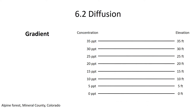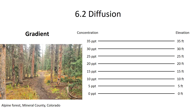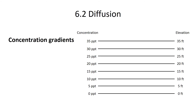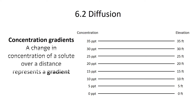To understand what a gradient is, imagine hiking up a hill or in the mountains. As you hike up, you're going up an elevation over a distance — you might hike one mile and climb 1,500 feet, undergoing an elevational gradient. Concentration gradients are very similar: if you go from an area with zero parts per thousand to another with 35 parts per thousand, you're undergoing a concentration gradient — a change in solute concentration over a distance.